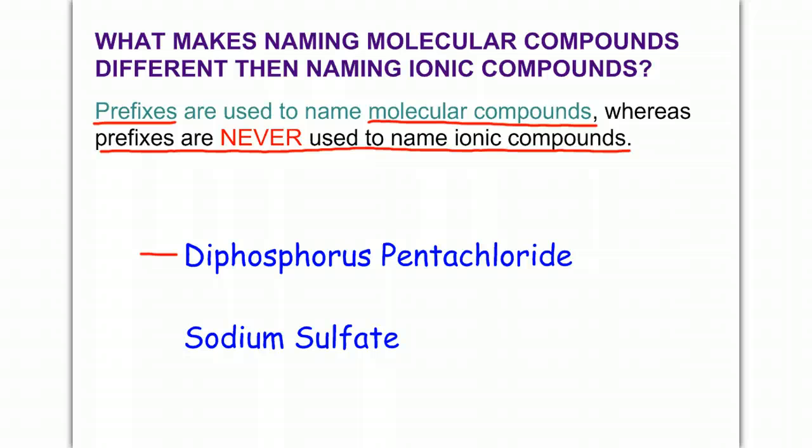This one is covalent, and I'll tell you how you can tell because we have phosphorus, which is a non-metal, and chloride, which is chlorine. Both of those, phosphorus is P, chloride is Cl, these are both non-metals making this covalent. Notice the prefixes in the front, di and pent. Those are prefixes, and I'm going to give you a list momentarily.